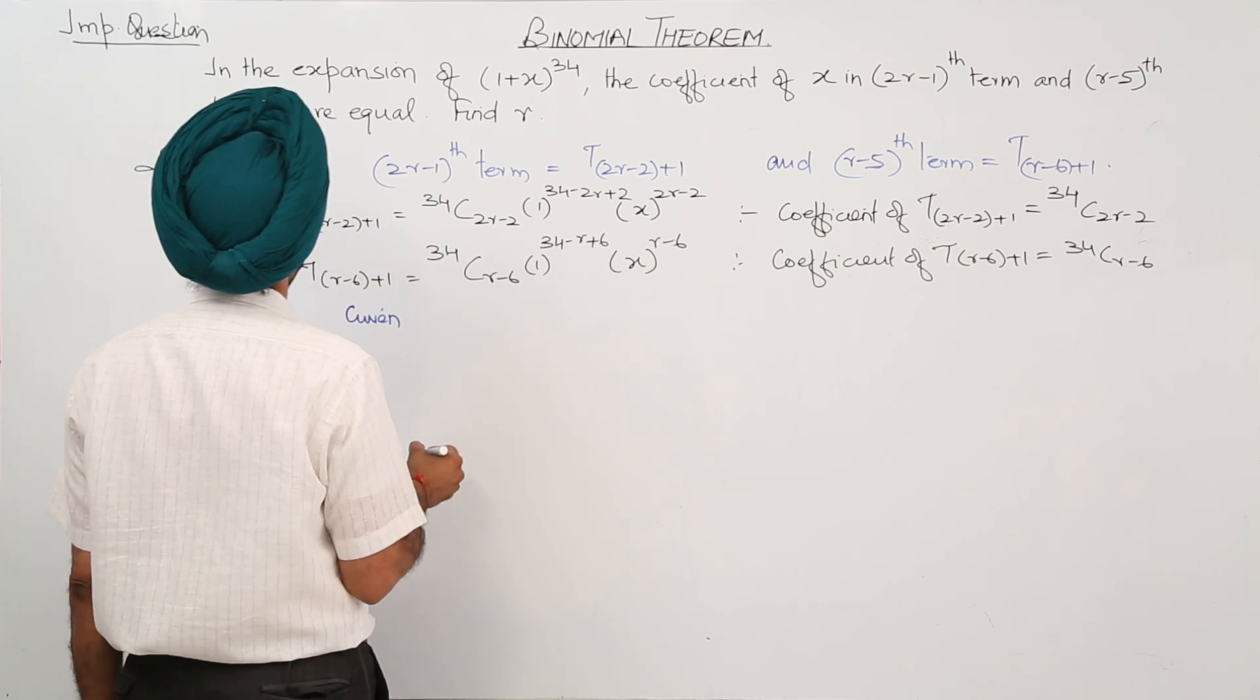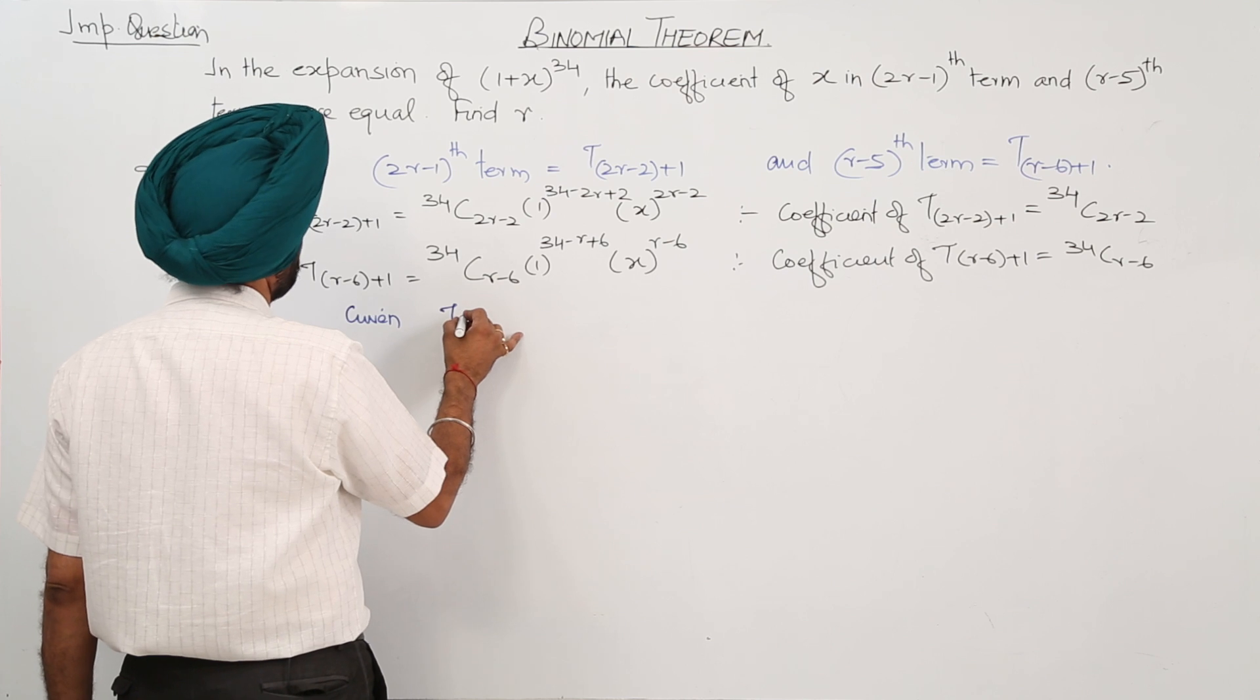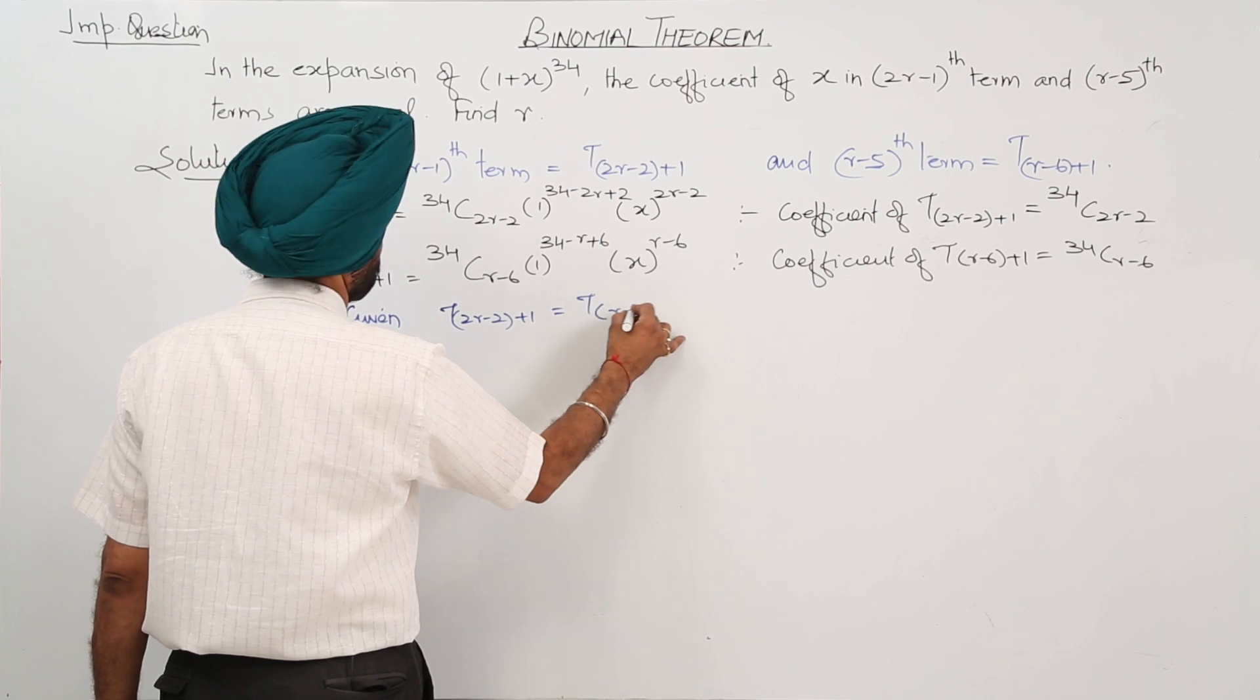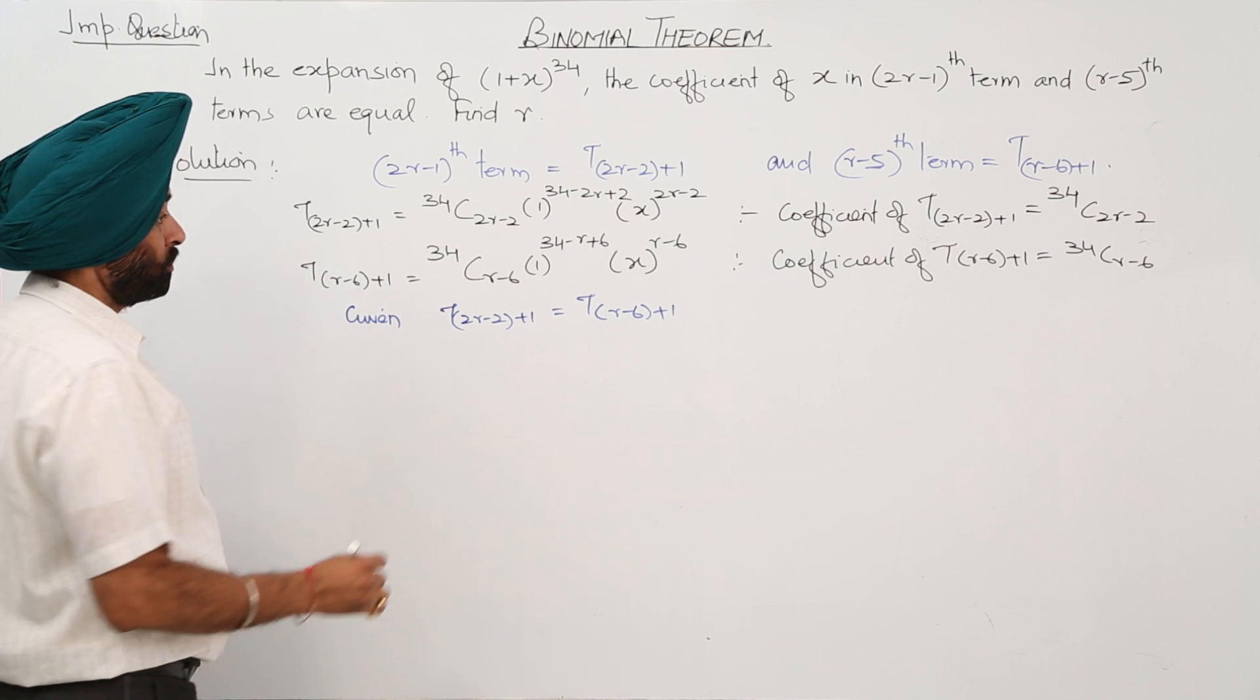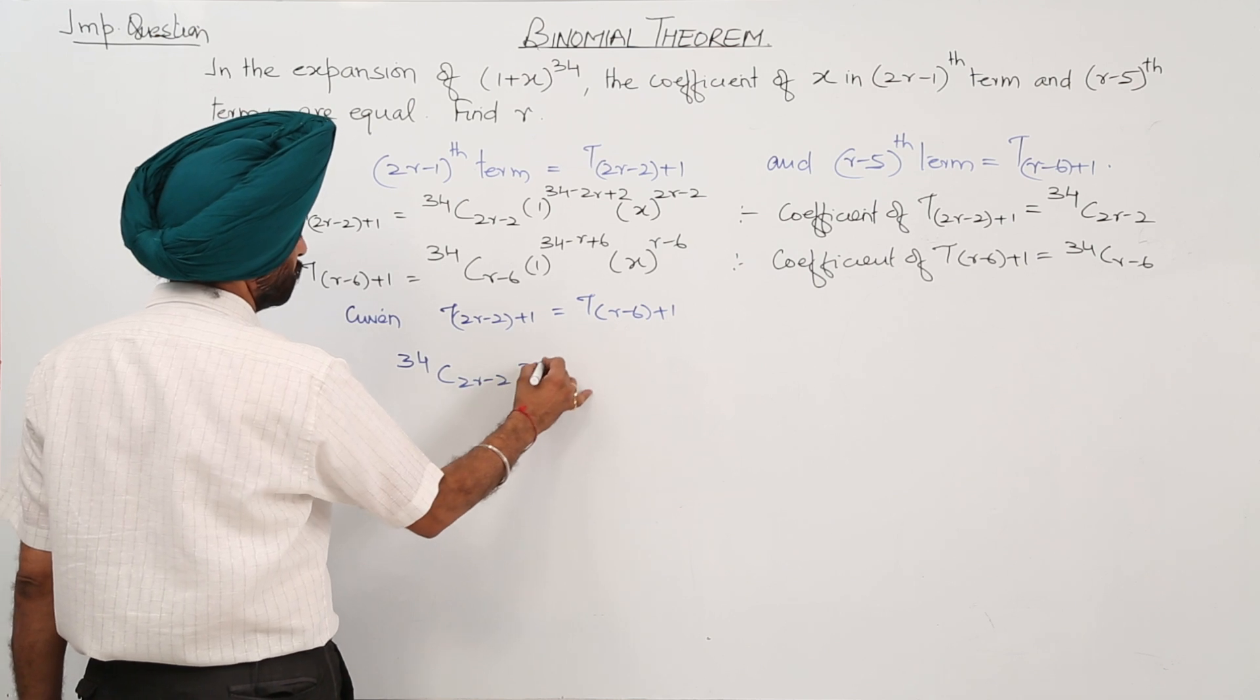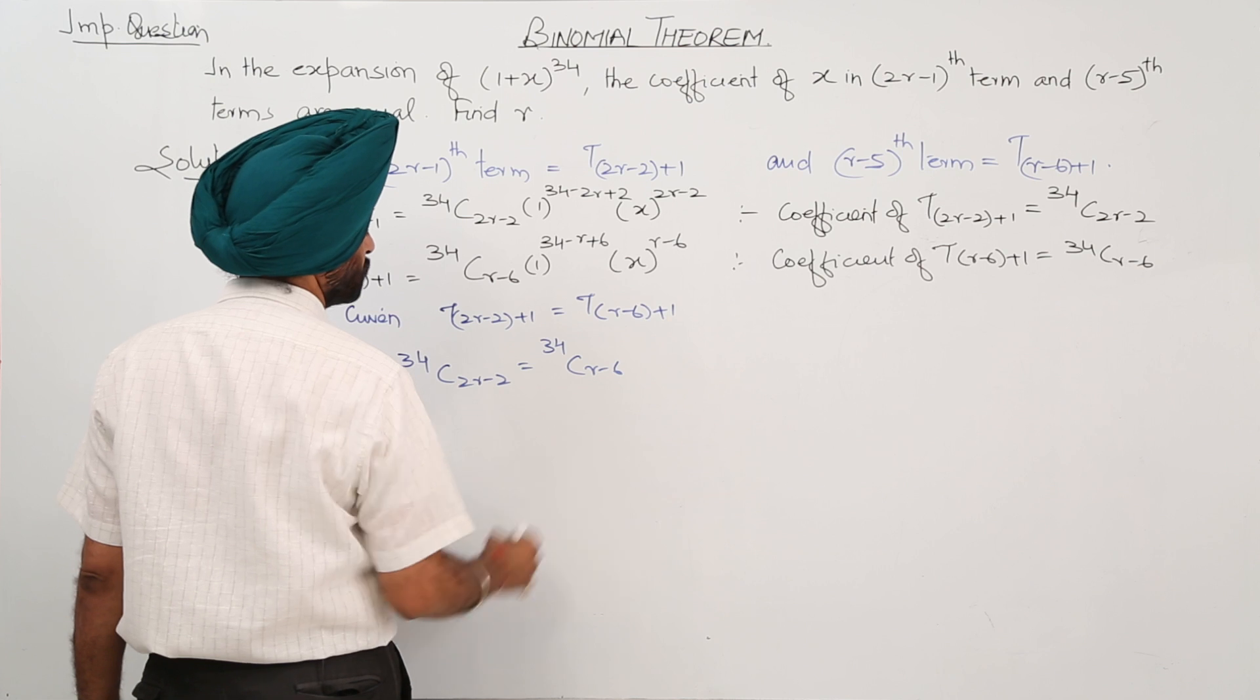Given that T_{2r-2+1} equals T_{r-6+1}, we have 34C_{2r-2} equals 34C_{r-6}.